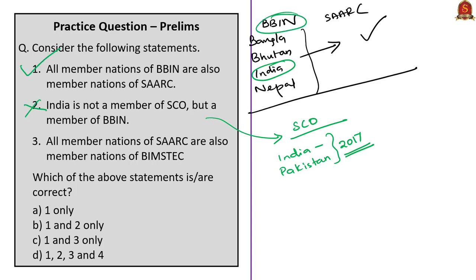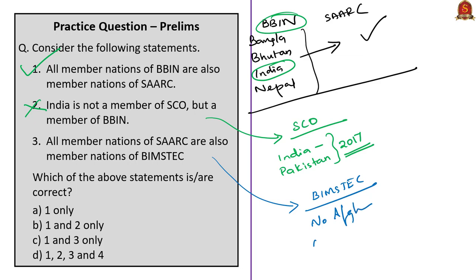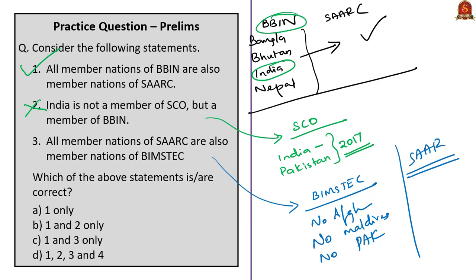The third statement states that all member countries of SAARC are also member nations of BIMSTEC. But BIMSTEC does not include Afghanistan, Pakistan and Maldives, which are members of SAARC. Therefore, we cannot say all member nations of SAARC are also member nations of BIMSTEC, and the third statement is also wrong. We have to eliminate statements 2 and 3, and the answer for this question is option A — only statement one is correct.